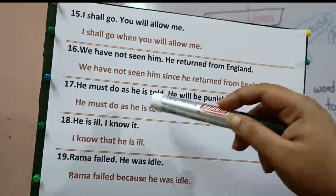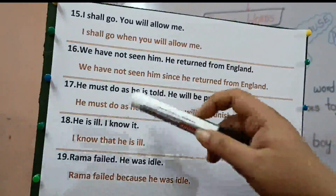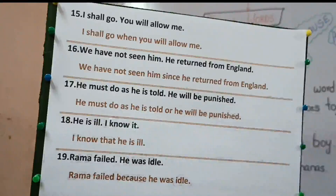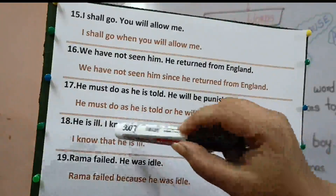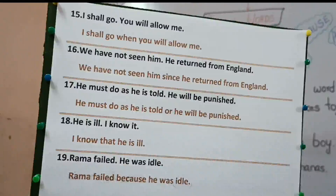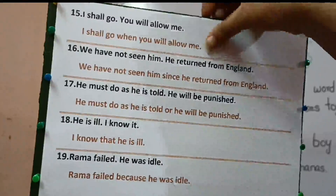Seventeenth part: he must do as he is told. He'll be punished. Here the choices are being given. He must do as he is told, or he'll be punished. Whenever the choices come, you have to use 'or'. Eighteenth part: he is ill. I know it. Here the fact is being denoted. I know that he is ill. We use the second part of the sentence first, then 'that' as a conjunction, then the first part. Nineteenth part: Rama failed. He was idle. The reason is being given — Rama failed because he was idle.